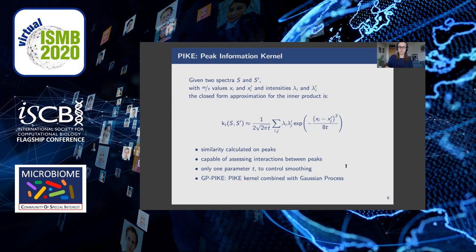Secondly, the kernel is capable of assessing interactions between peaks because all peak combinations are to some extent compared to one another. This is important for MALDI-TOF mass spectra, as some biological fragments can be detected in different locations along the x-axis, since the x-axis shows the mass-to-charge ratio and not just the mass. Additionally, for our kernel, solely a single parameter needs to be optimized, T, which controls the degree of smoothing in the kernel. Smoothing works as a normalization and controls the influence of single peaks, and because it can regulate the influence of small peaks, T implicitly works as a noise reduction on MALDI-TOF spectra, where very small peaks are often due to noise.